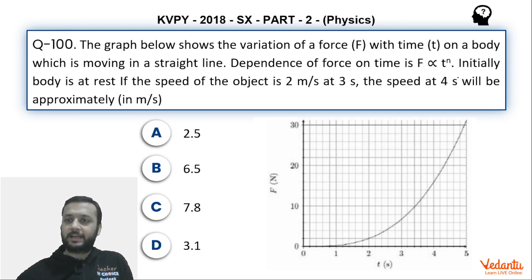It is also given that force is proportional to time to the power n. Force is plotted on the y axis, time is plotted on the x axis. It is also given that at t equals 3 seconds the speed of the particle is 2 meter per second, and we have to find the speed at 4 seconds. So this is the data.